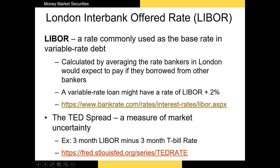We have one final topic: the TED spread. The TED spread is nothing more than the difference between the LIBOR of a certain maturity and the T-bill rate with the same maturity. The TED spread is one of our best measures of market uncertainty, because we're looking at the difference between a risky interest rate and our risk-free rate. The wider the TED spread, the more uncertain investors are about market conditions.